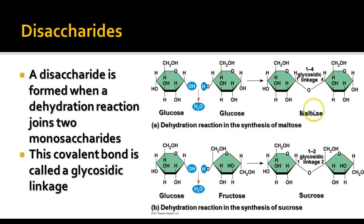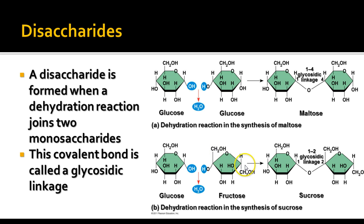Two glucoses added together makes maltose. Here we have a dehydration reaction forming sucrose — your normal table sugar. We have a glucose and a fructose that join together. The molecular formula for fructose is the same as glucose, but the CH₂OH is on two different carbons and the fructose structure is a little different — it's a ketose sugar rather than an aldose sugar. The same kind of dehydration reaction forms that glycosidic linkage to make the sucrose disaccharide.